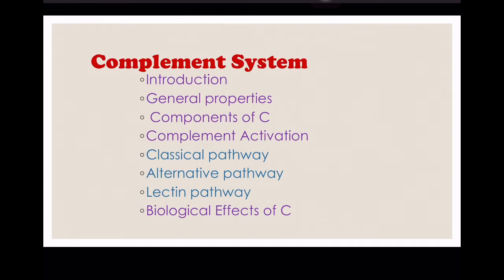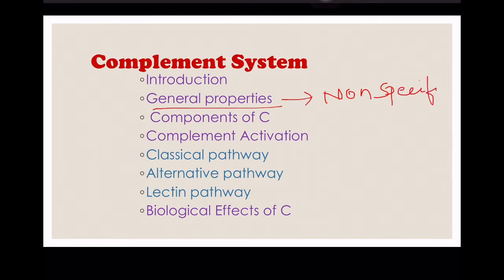The advantage of cascade reactions is that the enzymes produce many molecules of the succeeding components, providing amplification at each step, and every step has its own control mechanisms. Complement is present in the serum of all mammals and animals including birds, amphibians, and fish. It is non-specific, which is why it is part of innate immunity.